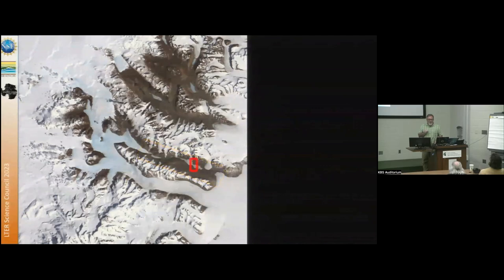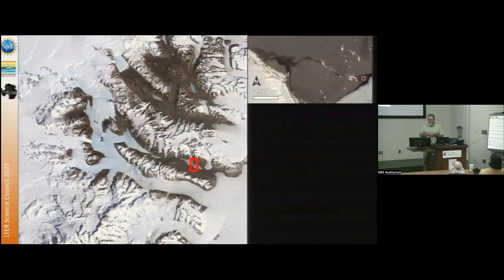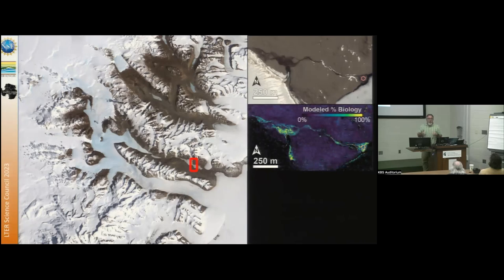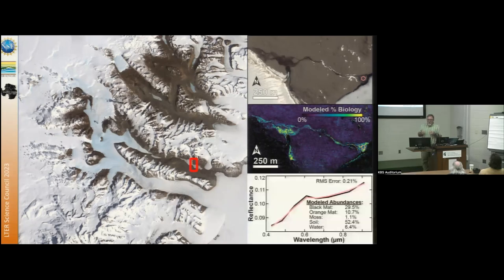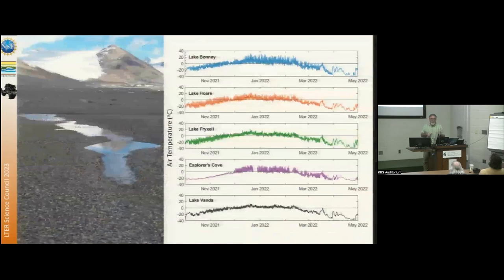I'll take us down to this little section — the edge of the Canada Glacier on the left, and there's a meltwater stream that flows into Lake Frixel. This is work that Mark has been pioneering, where we've been using remote sensing since about 2010 at high resolution, one-meter scale, looking at different spectra to assess algal mat coverage. Not only are we thinking about where static nutrient stores are across the landscape, but we can now map the dynamics of life on top of that — mapping the abundance of black mats and orange mats, which have unique spectral signatures.